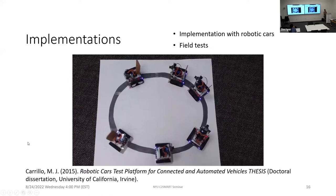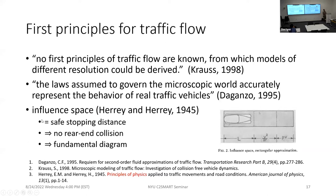After seeing that they really collide into each other in the robot car test, we realized traditional models cannot be used to control these robot cars. They can be useful for planning and aggregate-level operation, but not for real-time control. So we want to start with first principles. This first principle is not new — as early as 1945, two physicists wrote an article titled 'Principles of Physics Applied to Traffic Movement.' They define the safe stopping distance, which leads to a no-rear-end-collision condition.